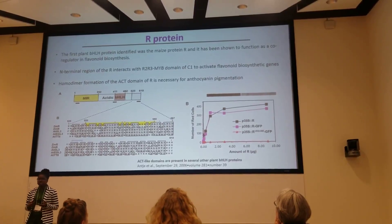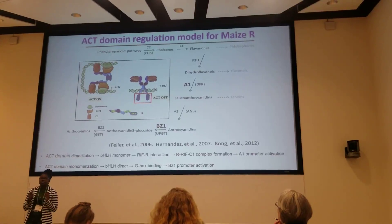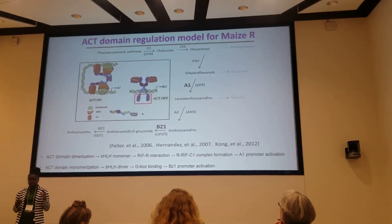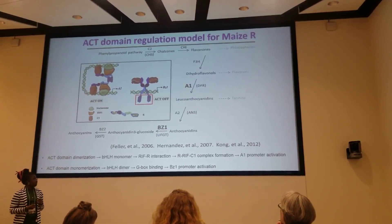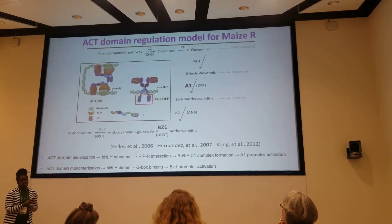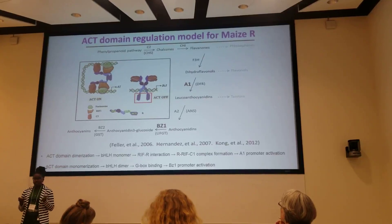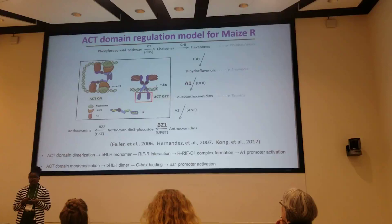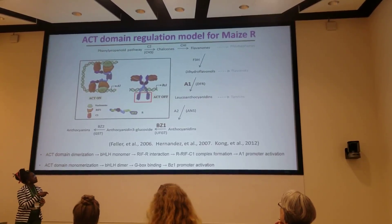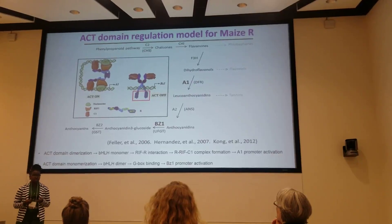We wanted to understand exactly how this regulation works. It turns out that when the ACT domain forms a homodimer, the bHLH domain remains in its monomeric form and is able to bind other transcription factors such as RIF1. That complex, together with C1, activates the A1 promoter, which is responsible for the conversion of dihydroflavonols to leucoanthocyanins. When the ACT domain remains in its monomeric form, the bHLH domain dimerizes, and that complex binds to the G-box sequence and activates the BZ1 promoter, which is responsible for the completion of anthocyanin biosynthesis.